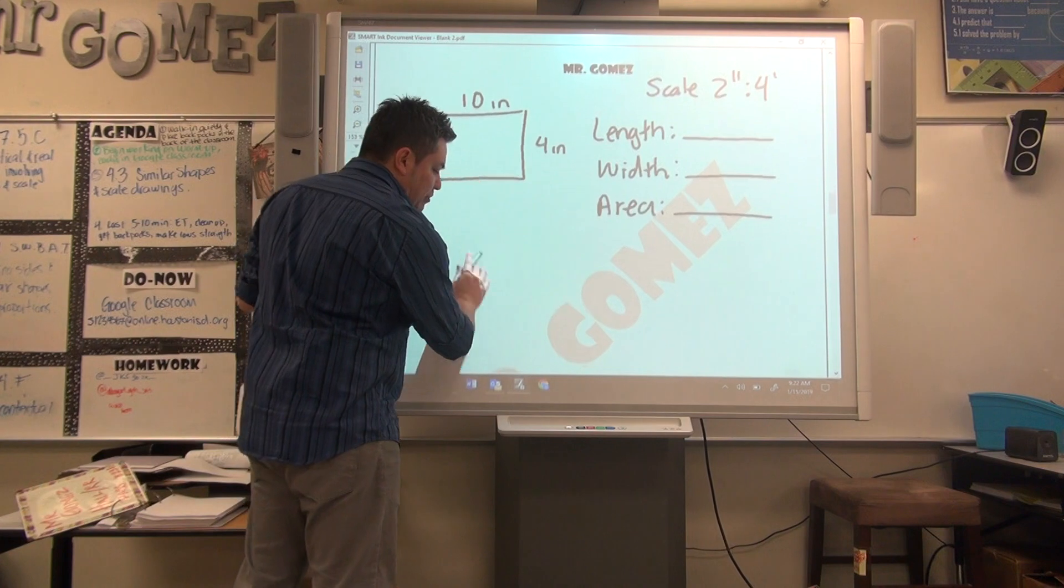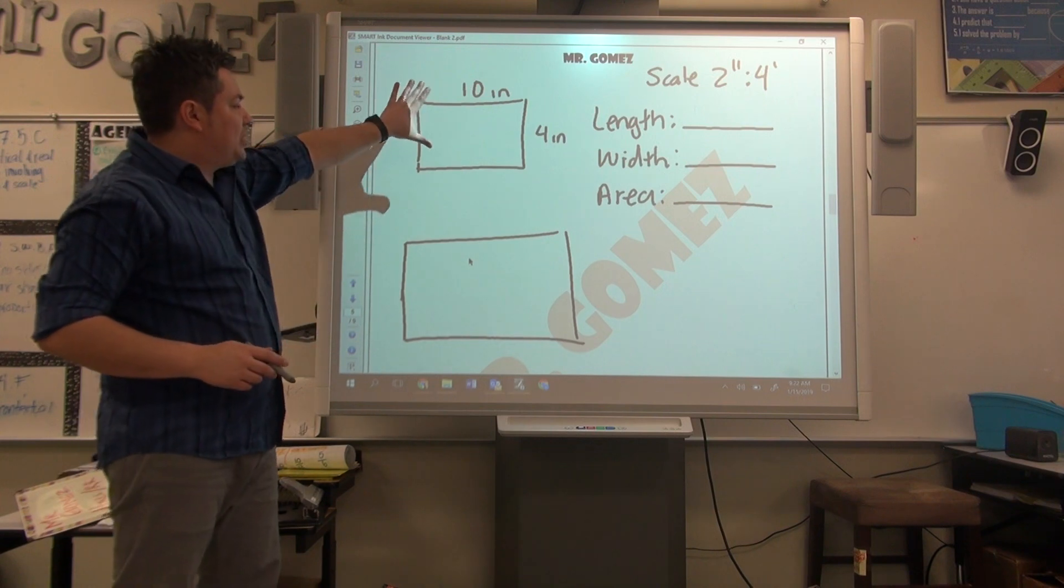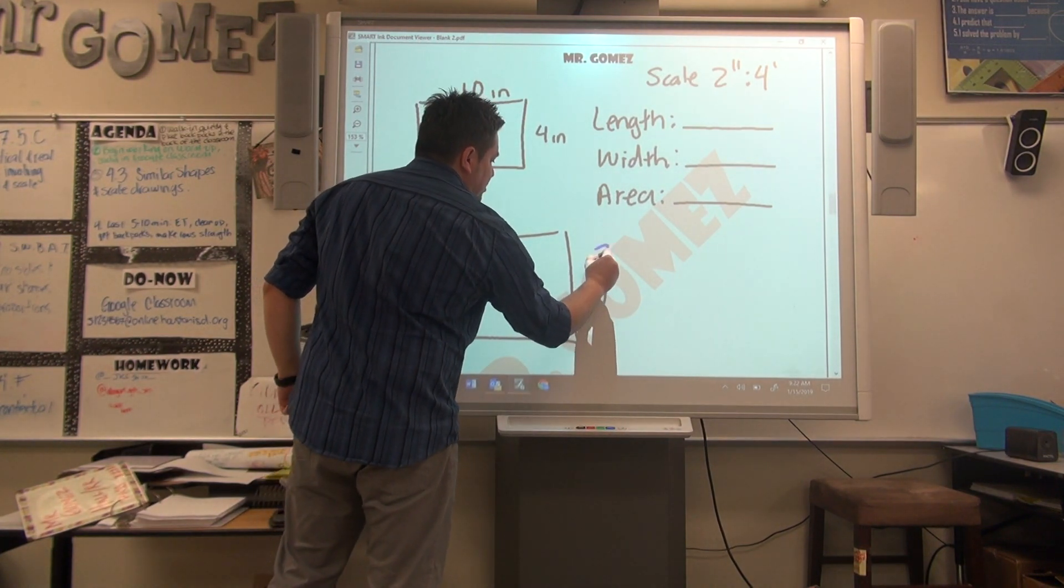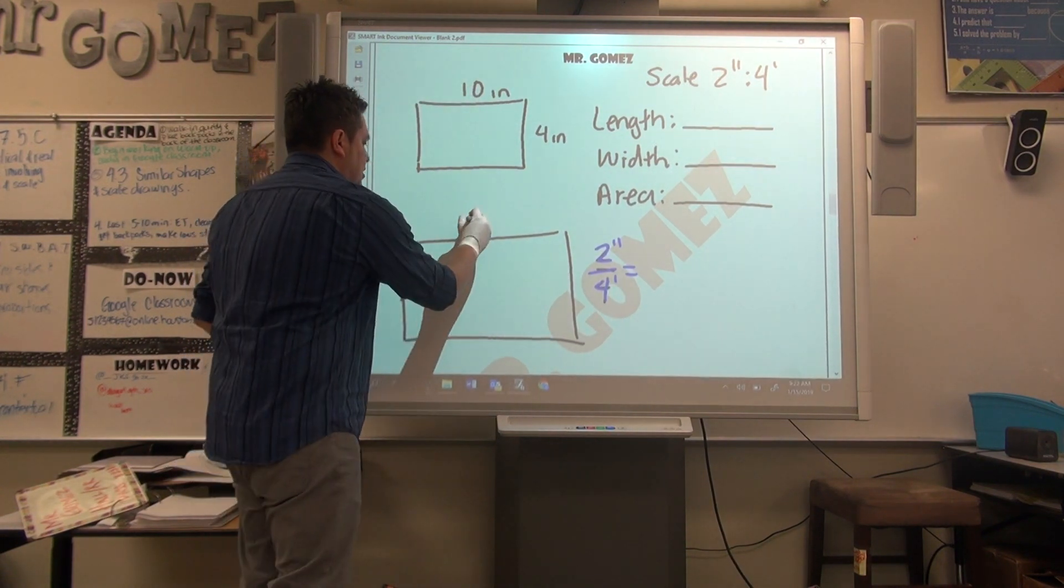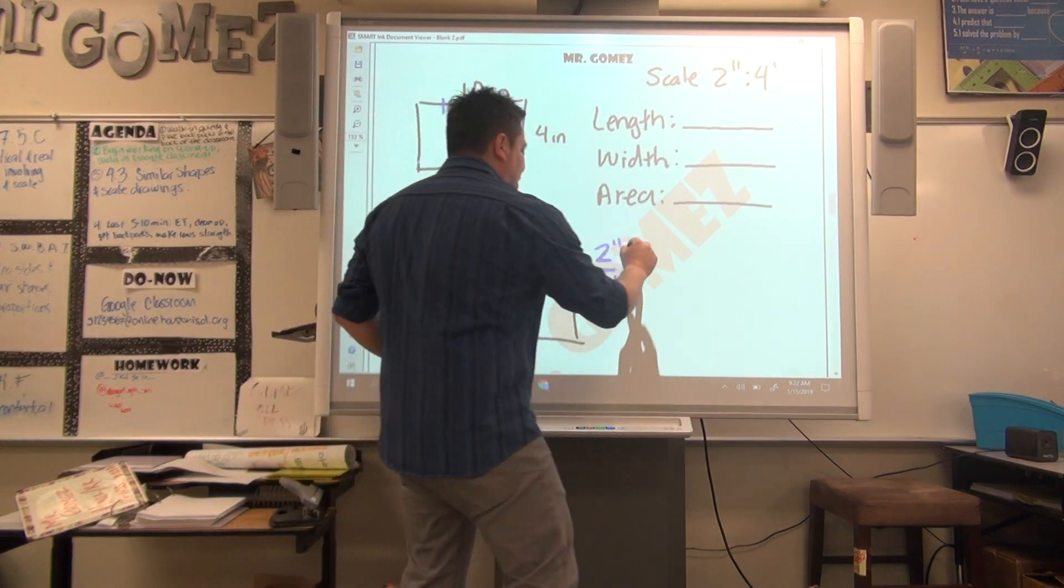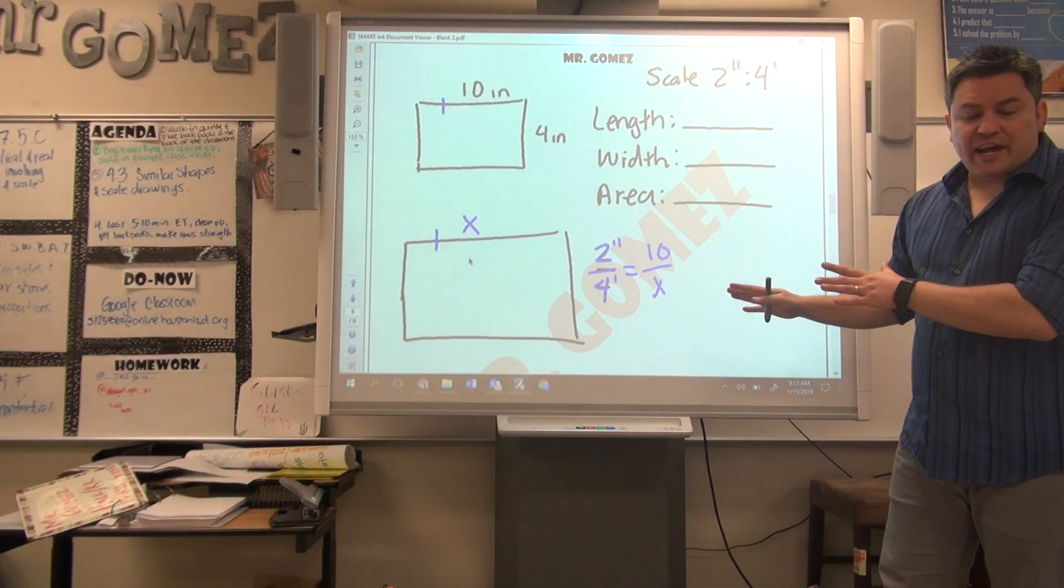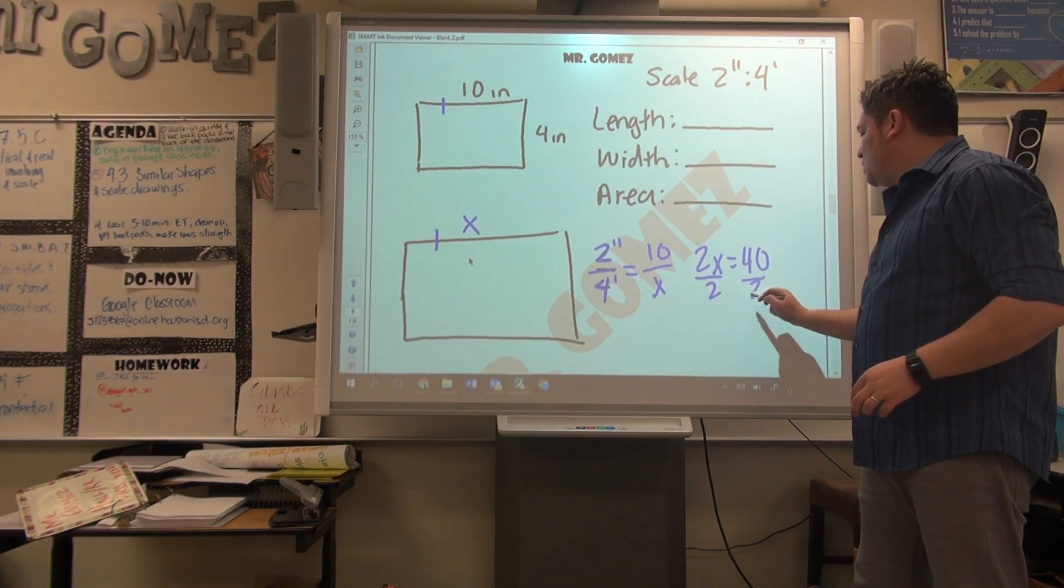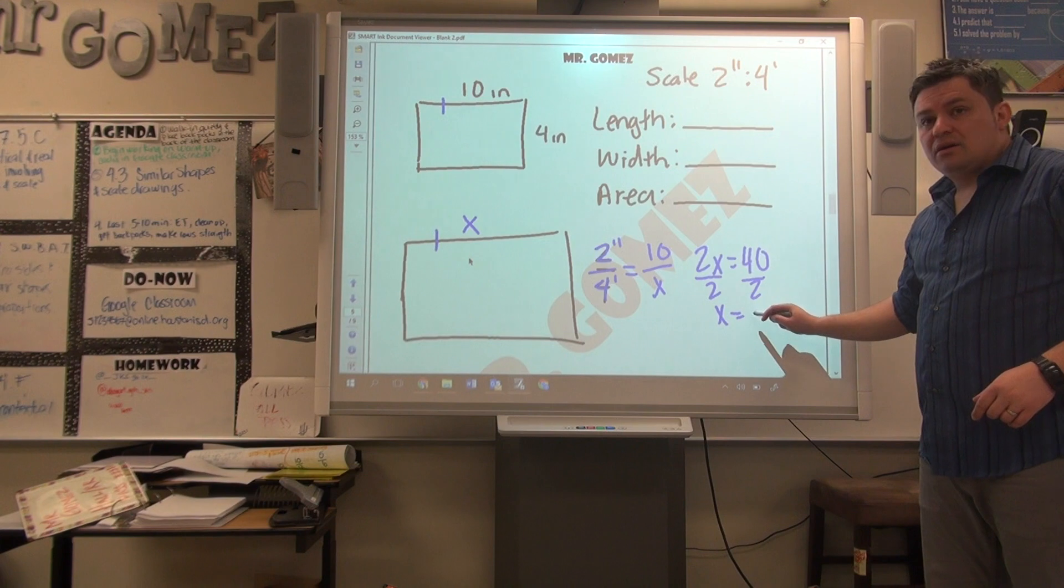The new rectangle has to be bigger. We can come up with every single drawing by setting up the scale factor 2 to 4. 2 inches to 4 feet equals x to 10. That's going to give you the right answer every time. You do cross product, so you're going to have 2x equals 40, and when you divide by 2, x equals 20.